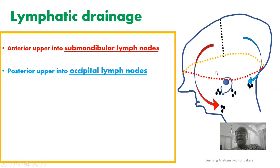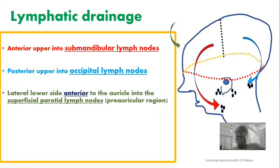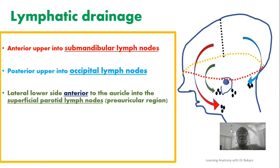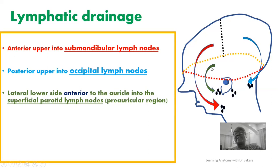Going to the lower part of the scalp, the auricle is used as a landmark. The region located in the lower part specifically anterior to the auricle — this lymph will be drained into the superficial parotid lymph node. This superficial parotid lymph node is located anterior to the auricle, in the pre-auricular region. Pre-auricular means anterior to the auricle. So the anterior lower part collects lymph from this region and drains it into the superficial parotid lymph node.